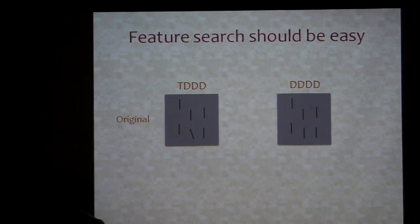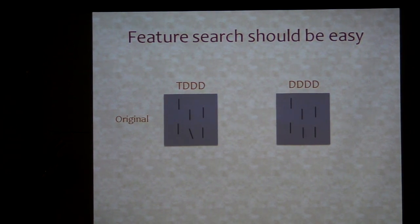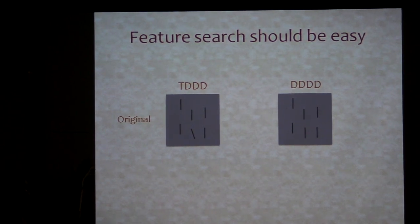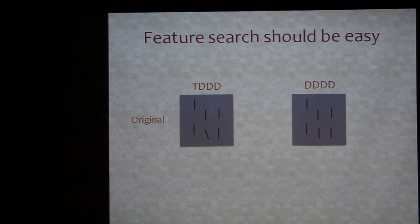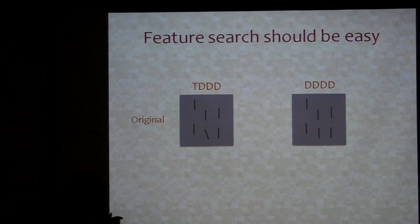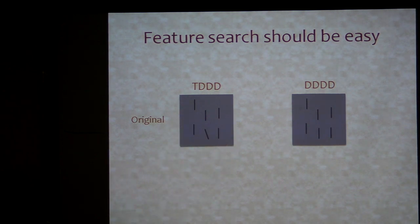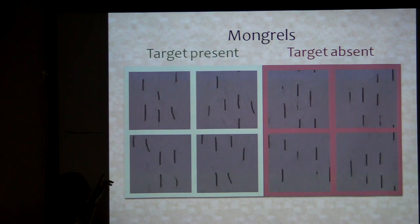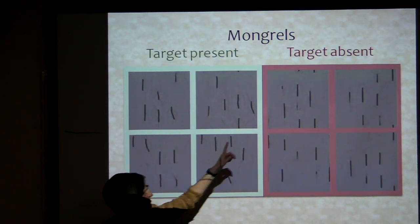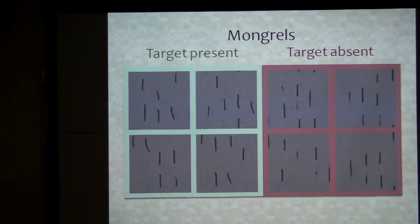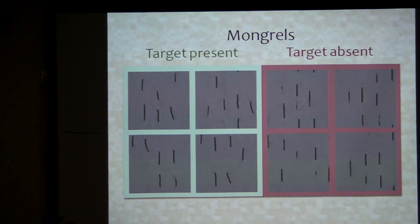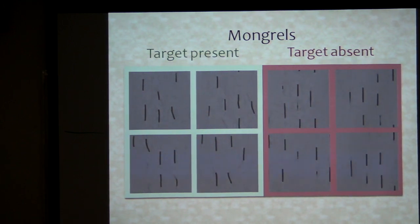We're going to do the same sort of thing again: take patches that have either target present or distractor only, mongrelize them, and ask people to guess which one they were originally. So here is a feature search — looking for a tilted line among verticals. Here's what the mongrels look like. I think you'll agree it's pretty easy to tell those two sets apart — there's a tilted line in all the target-present ones and none in the target-absent ones.